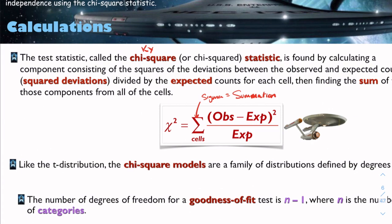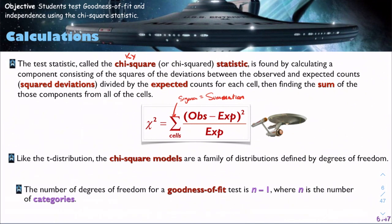Like the t-distribution, the chi-square models are a family of distributions defined by the degrees of freedom. So the model is not normal and always the same, but rather, depending on the degrees of freedom here, it's going to change. The number of degrees of freedom for a goodness-of-fit test is n-1, where n, this time, is the number of categories.